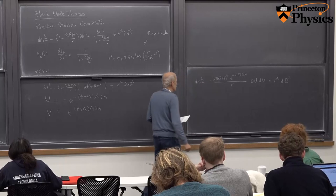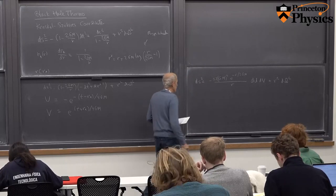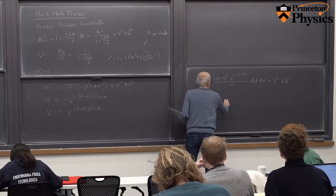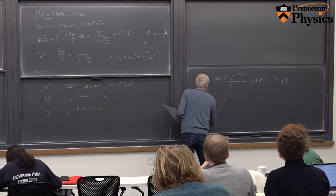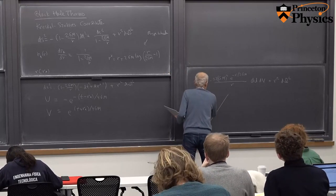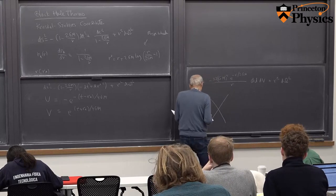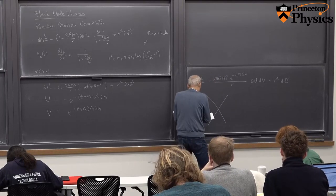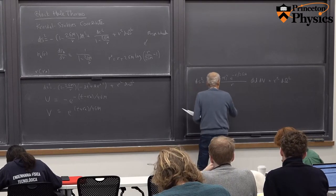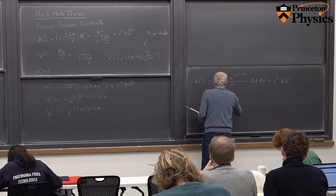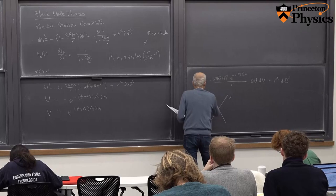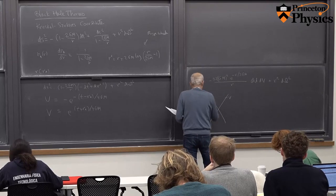This is the form usually assumed in drawing the Penrose diagram of the maximally extended solution. If we draw v going this way and u going this way...